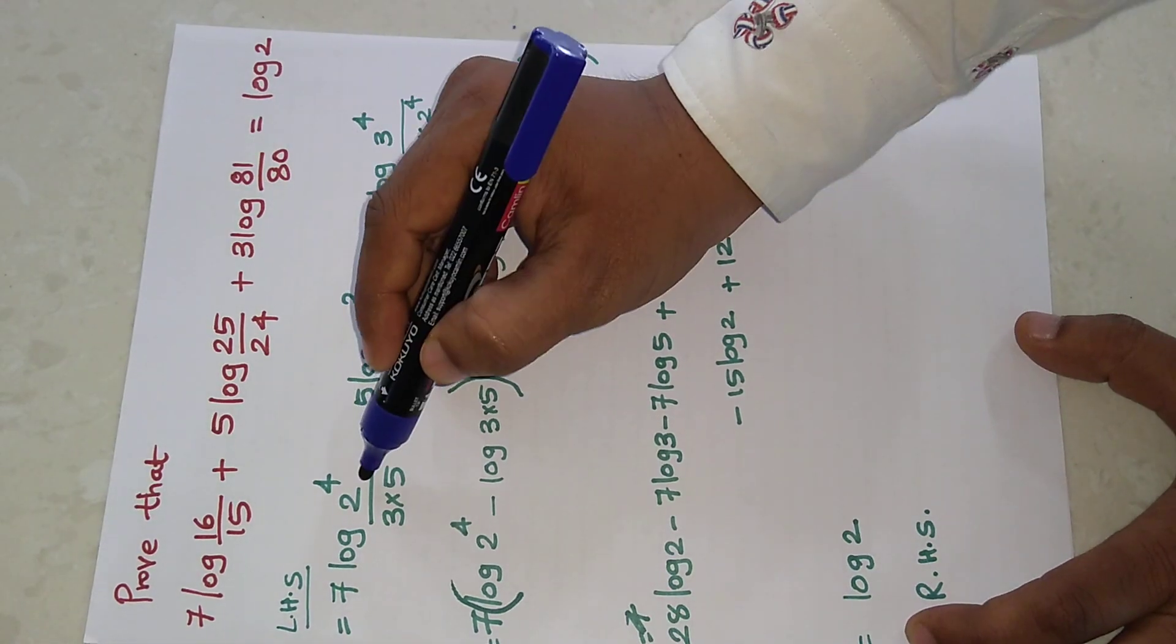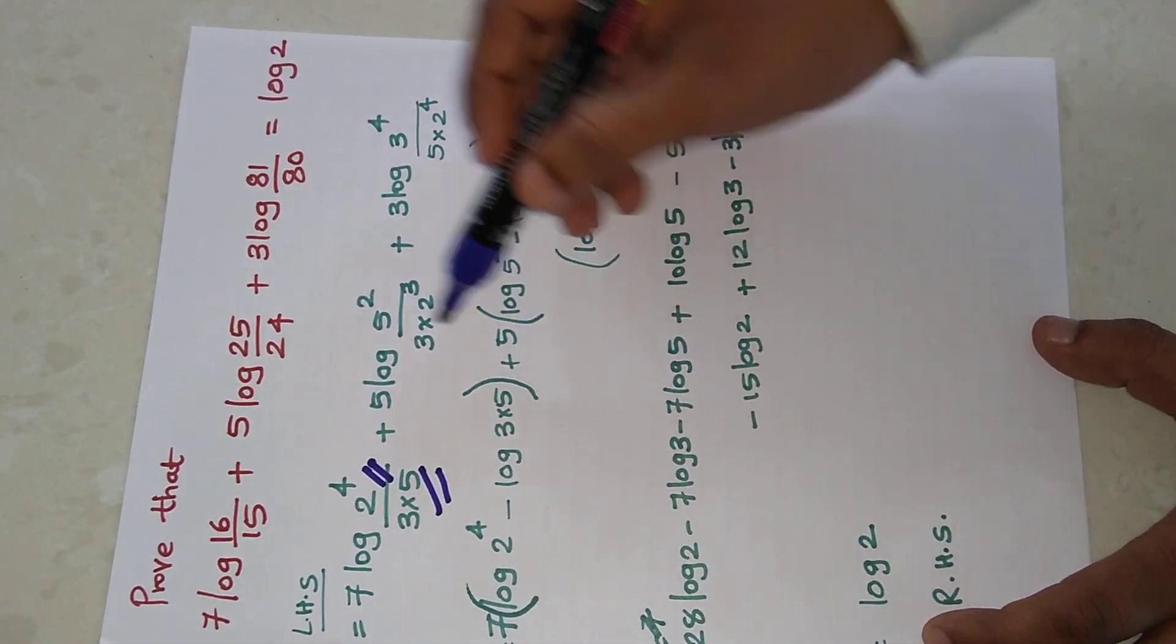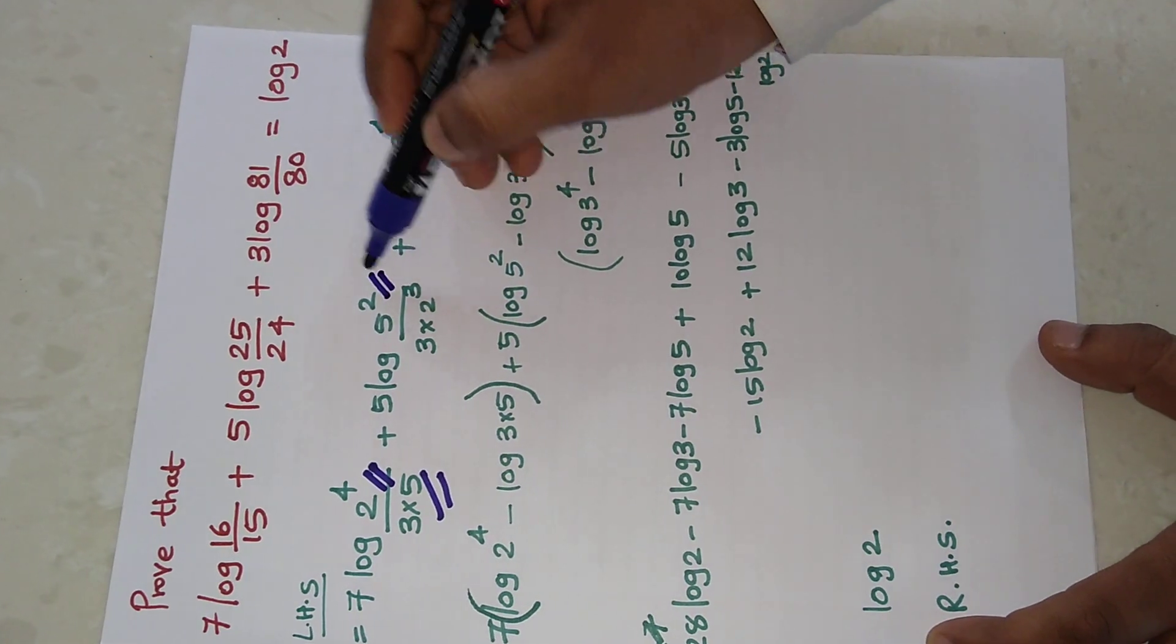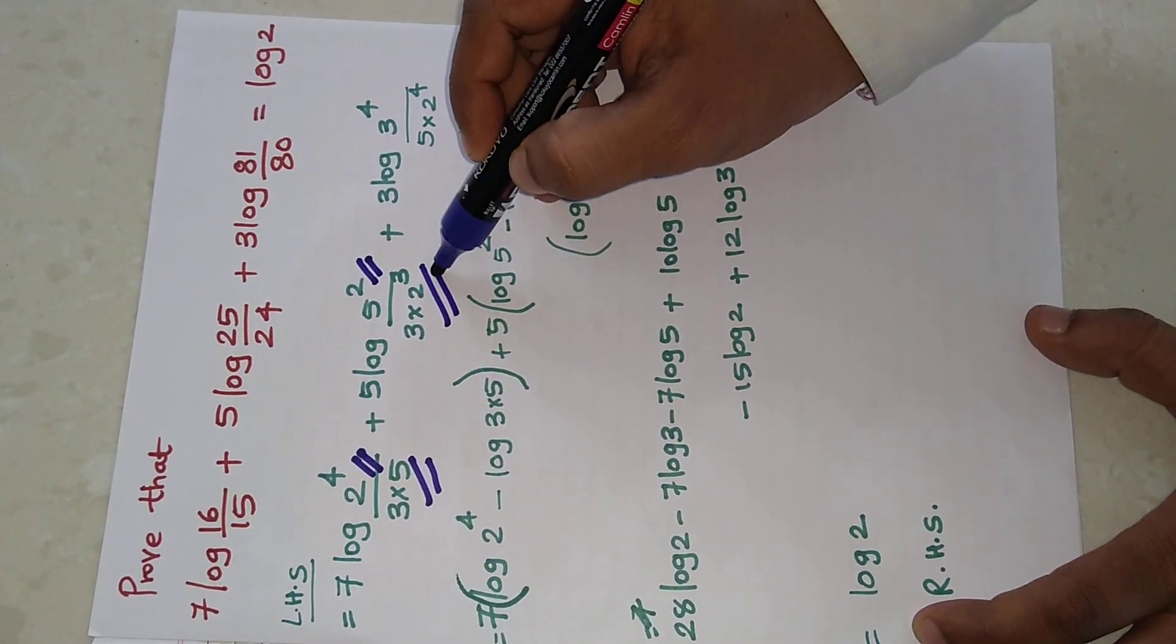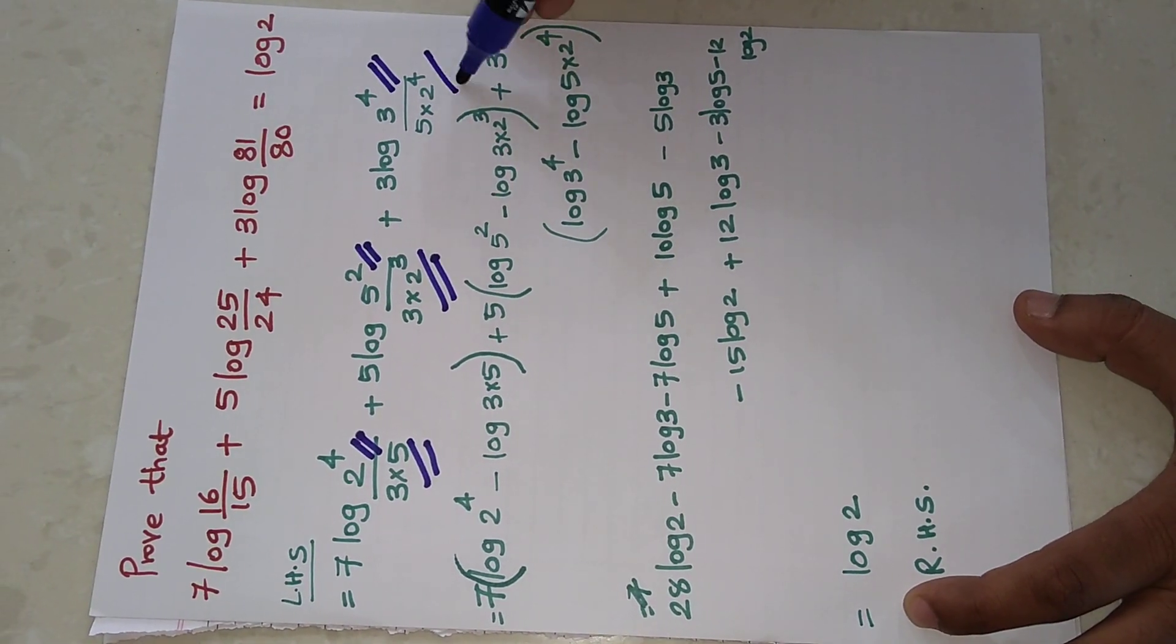16 we will replace with 2^4 and 15 we are replacing with 3×5. 25 becomes 5^2 and 24 becomes 3×2^3. 81 is 3^4 and 80 is 5×2^4. We are replacing all these terms in that form.